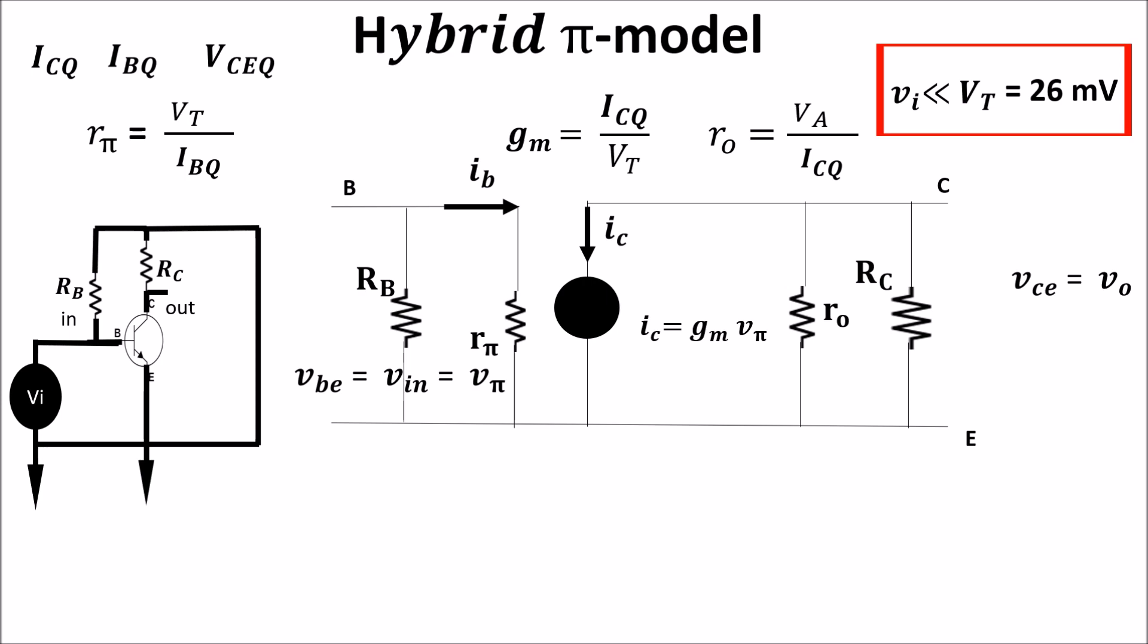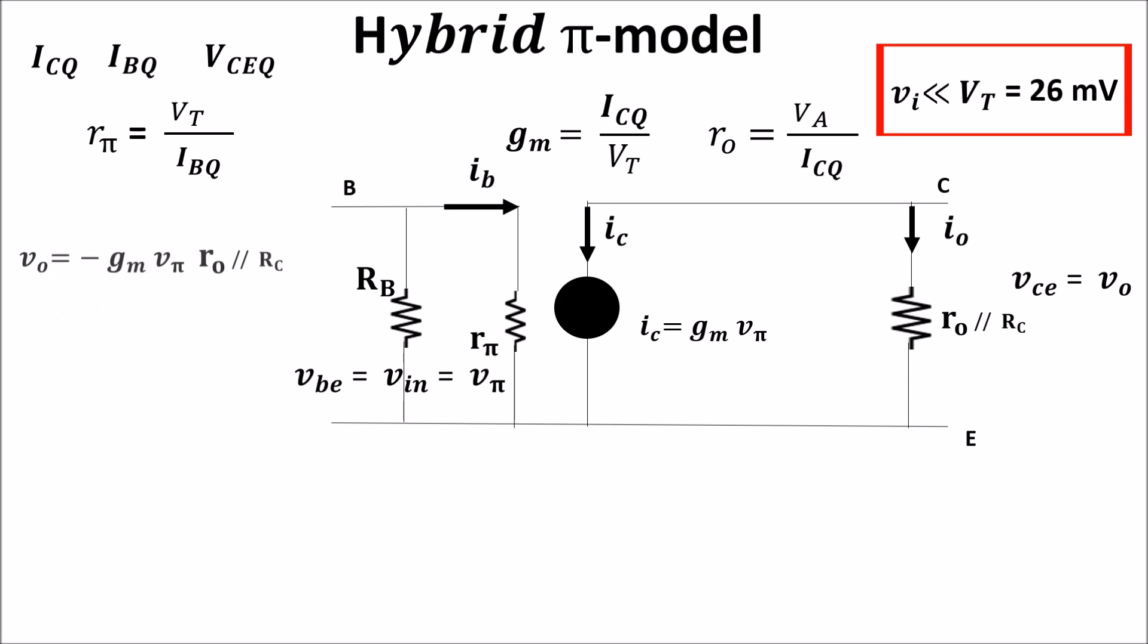Now we can see the gain of this circuit. First we simplify the circuit in this way. And we get that V out is equal minus GM times V pi times the parallel between RC and RO. And because V pi is equal V in, the gain is this.